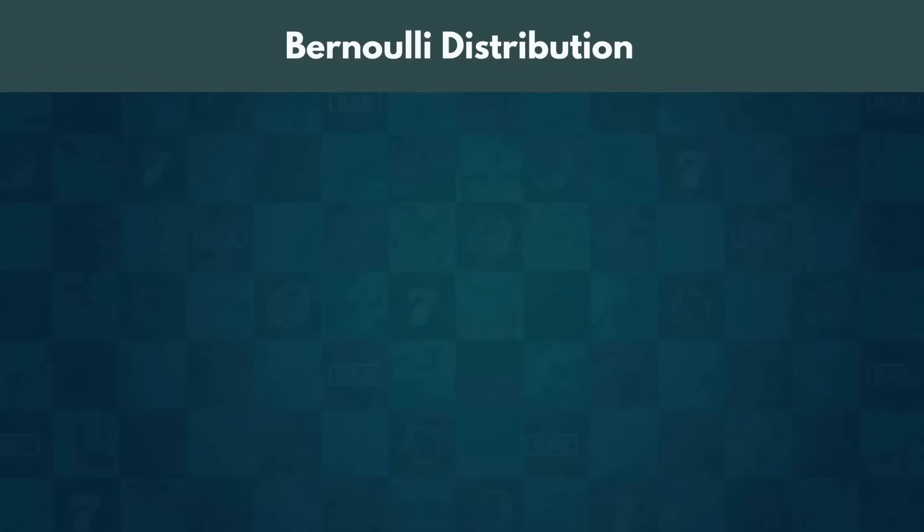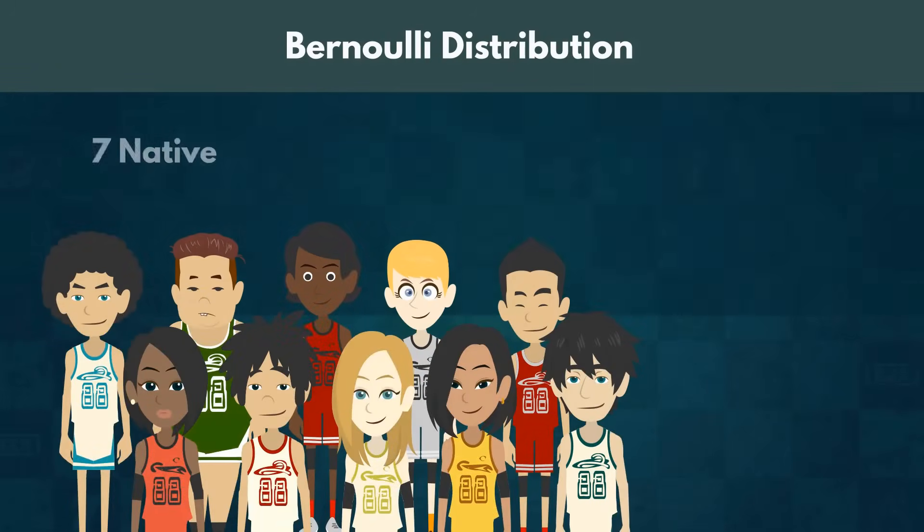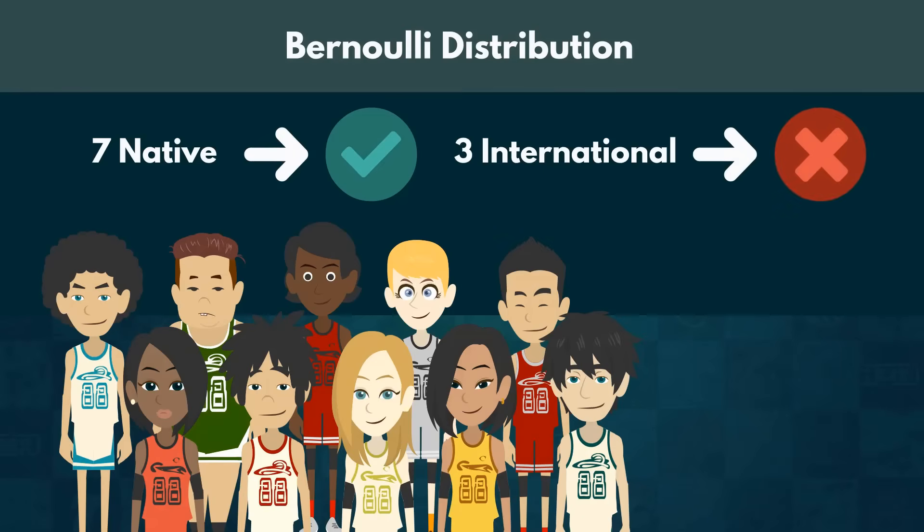Imagine we are required to elect a captain for our college sports team. The team consists of seven native students and three international students. We assign the captain being domestic to be true, and the captain being international as false. Since the outcome can now only be true or false, we have a Bernoulli distribution.